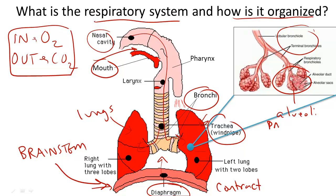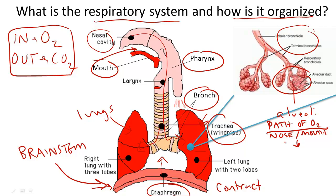Let's go over the path of oxygen. Oxygen first enters through the nose or the mouth, then enters the pharynx, which is the upper throat, followed by the larynx, the lower throat where the voice box is housed. Next, it travels down a long tube surrounded by circular cartilage tissue called the trachea.